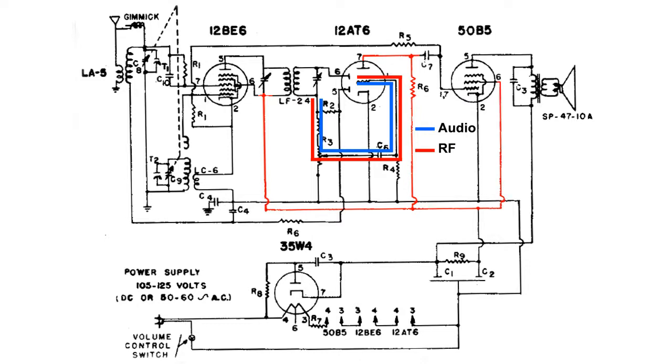Some of it is actually going to go through the grid of the 50B5 at pin 6. And worst of all, it's going to go also through C7 with the audio signal over to the control grid of the 50B5.